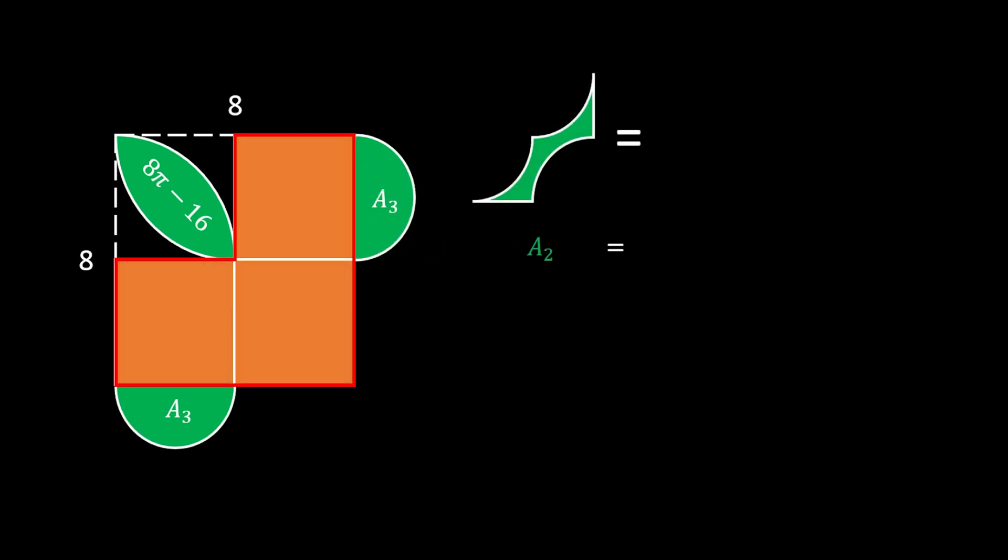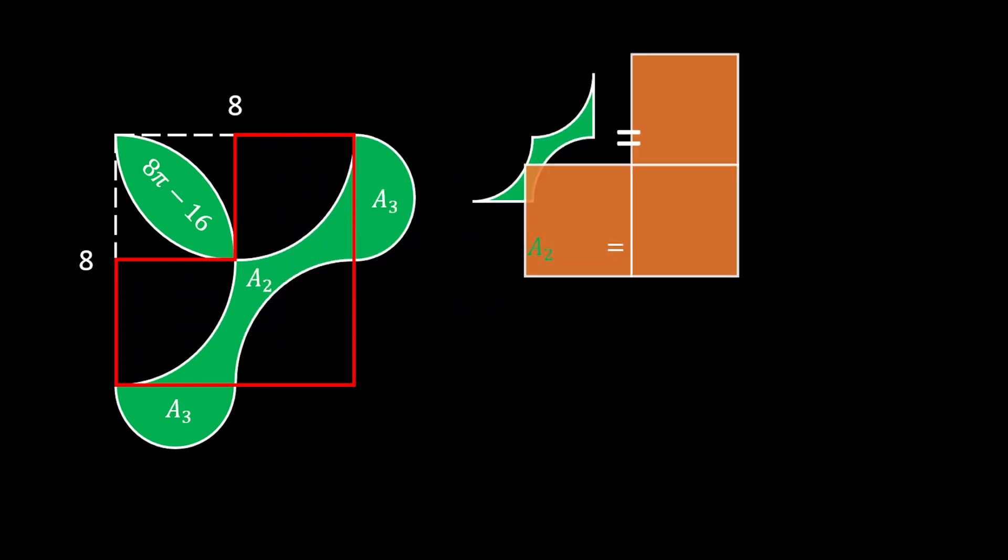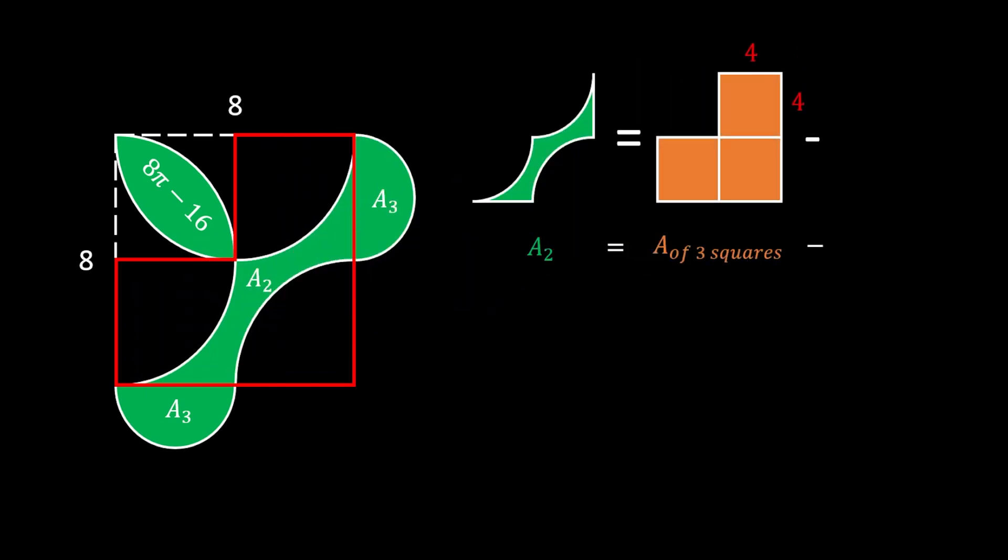Now let's take a look at area 2. We can isolate this area in this red shape. This area will actually be equal to this orange shape, which represents three squares with sides of 4, minus this violet shape, which represents three quarters of the same circle.